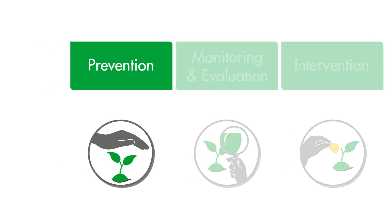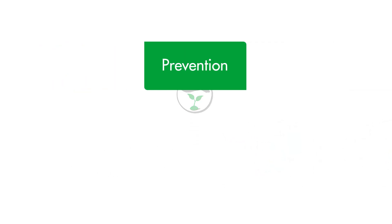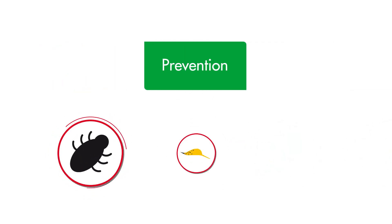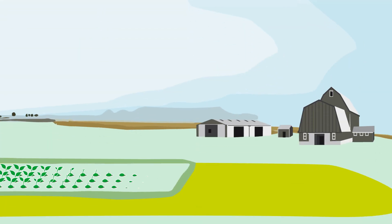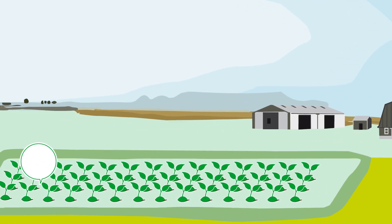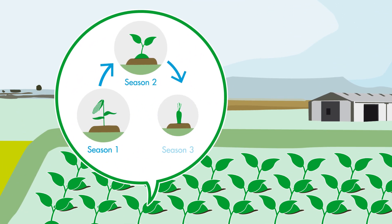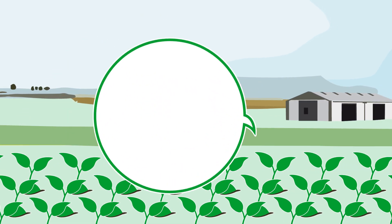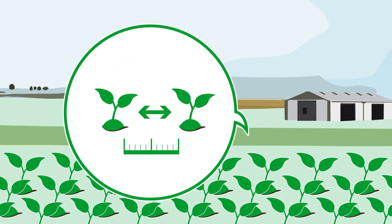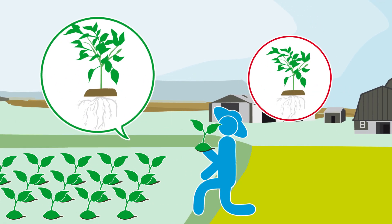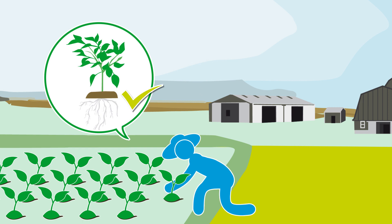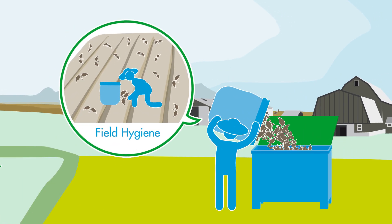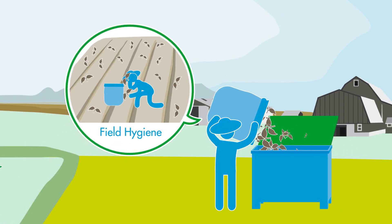As a first step, maximum effort should be made to prevent problems with pests, diseases, and weeds to avoid the need for intervention. Examples include rotation of crops according to a predefined crop rotation program, ensuring optimal plant spacing or plant density, choosing more resistant plant varieties and rootstocks, and ensuring hygienic conditions in and around the field.